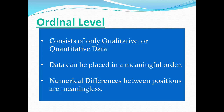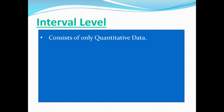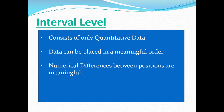The next level is the interval level of measurement. At the interval level, we no longer have qualitative data — this consists only of quantitative data. Just like the ordinal level, we can put data in a meaningful order, but we can also do subtractions. Numerical differences between positions are meaningful, so if you subtract numbers from this data, that difference has meaning. However, zeros at this level are not inherent zeros.